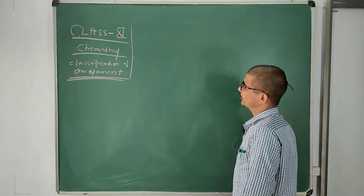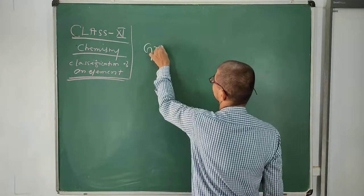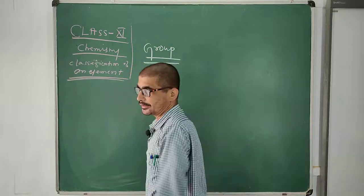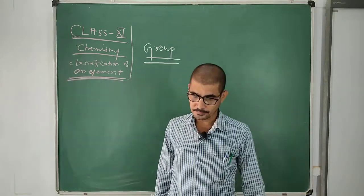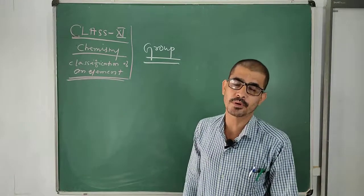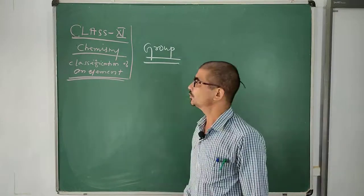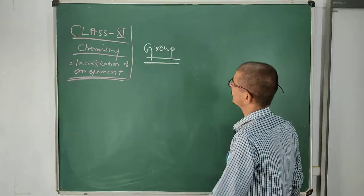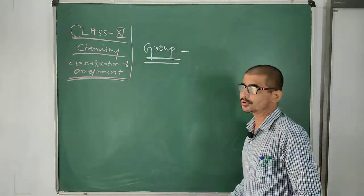So at first, what is a group? You know that the entire modern periodic table is divided into two parts: group and period. So what is a group? A vertical column in the periodic table is called a group.